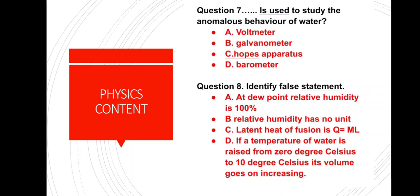Question number 8: Identify the false statement. Option A: At dew point, relative humidity is 100%. B: Relative humidity has no unit. C: Latent heat of fusion is Q = mL. D: If the temperature of water is raised from 0°C to 10°C, its volume goes on increasing. The false statement is option D. When temperature rises from 0°C to 4°C, volume actually decreases, then increases from 4°C to 10°C. This is the anomalous behavior of water.